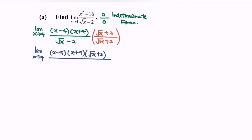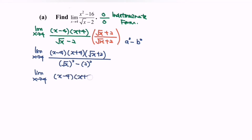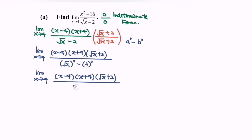I'm going to apply the formula where we have a² minus b², because we are dealing with the multiplication of the conjugate. Here, a is square root of x, so (√x)² gives x, and b is 2, so b² gives 4. Rewriting the situation: limit when x approaching 4 for (x minus 4)(x plus 4)(square root of x plus 2) over (x minus 4). We notice that we have common terms, so we can simplify the situation.